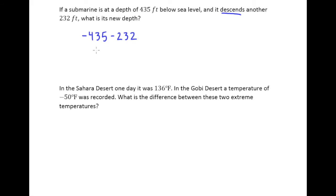This is a subtraction of integers problem and we need to turn our subtraction sign into adding the opposite. So negative 435 minus becomes plus, and the number becomes its opposite, so it's the same as negative 435 plus negative 232.